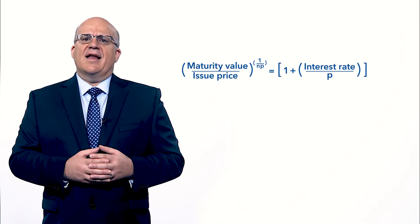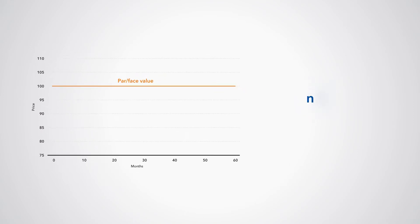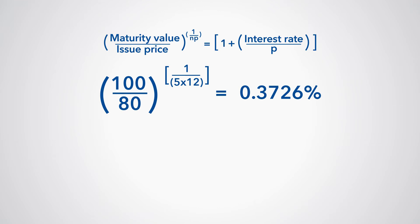Let's apply this formula to our earlier example. We have a zero-coupon bond with a face value and maturity value of 100. Its maturity is 5 years, so N is equal to 5. This bond is issued at a price of 80. The interest accrued from the discount on the debt security is calculated monthly, so P is equal to 12. The interest rate can therefore be calculated as: 100 divided by 80, to the power of 1 divided by the result of 5 multiplied by 12. This means the interest rate we will use is 0.3726% per month.